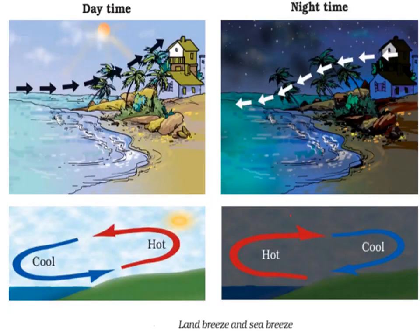In this picture it will be clear: in the daytime the land is hot and the water body is cool, and in the night time the water is hot and the land is cool. This is why land and sea breezes occur during daytime and night time respectively.